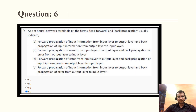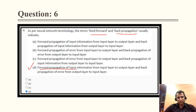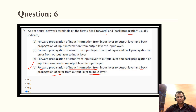Question 6: as per neural network terminology, the terms feed forward and back propagation indicate — feed forward means propagation of input information from input layer to output layer, and back propagation means propagation of error from output layer to input layer. When there is an error, we minimize it by passing it from output back to input. The correct answer is option D.